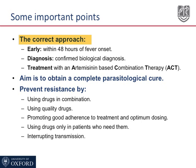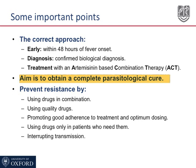By reducing the gametocyte carriage — the gametocytes are the sexual form of the parasite responsible for the transmission of the disease. The diagnosis should be confirmed by a biological test, either by microscopic examination of the peripheral blood or by rapid diagnostic tests. The treatment must be with an artemisinin-based combination therapy, or ACT. The aim of the treatment is to obtain a complete parasitological cure, as opposed to mere clinical improvement.